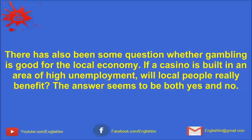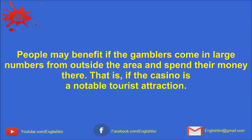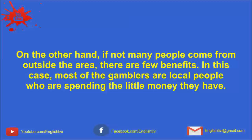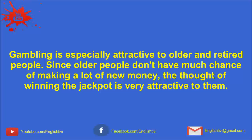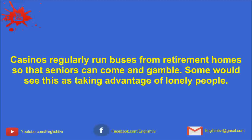People may benefit if the gamblers come in large numbers from outside the area and spend their money there — that is, if the casino is a notable tourist attraction. On the other hand, if not many people come from outside the area, there are few benefits. In this case, most of the gamblers are local people, who are spending the little money they have. Gambling is especially attractive to older and retired people. Since older people don't have much chance of making a lot of new money, the thought of winning the jackpot is very attractive to them. Casinos regularly run buses from retirement homes so that seniors can come and gamble. Some would see this as taking advantage of lonely people.